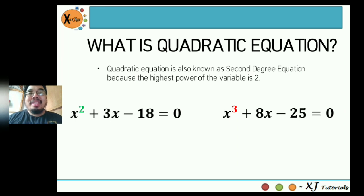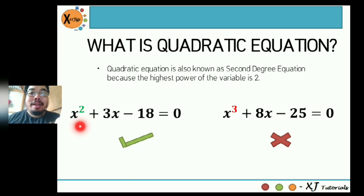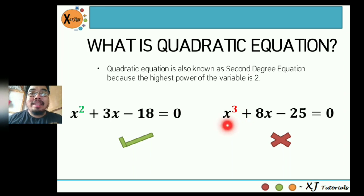So I'm giving you three seconds to think. The timer starts now. Alright, time is up. The correct answer is equation 1. Why? Because based on the definition above, in equation 1, the highest power of the variable x is 2. Unlike on the second equation, the highest power of the variable x is 3.